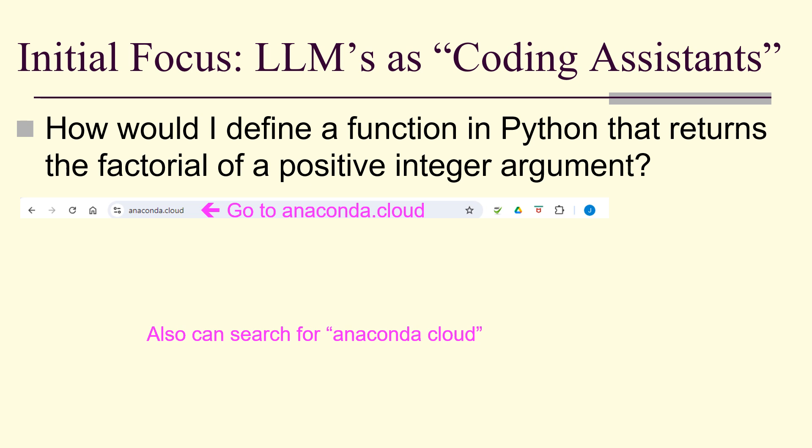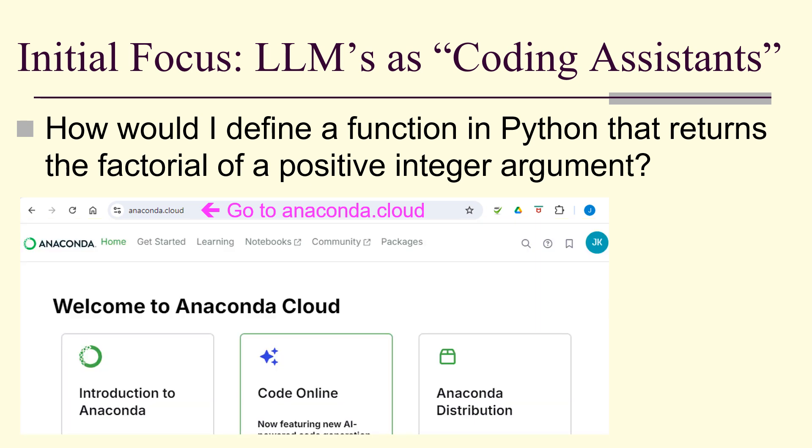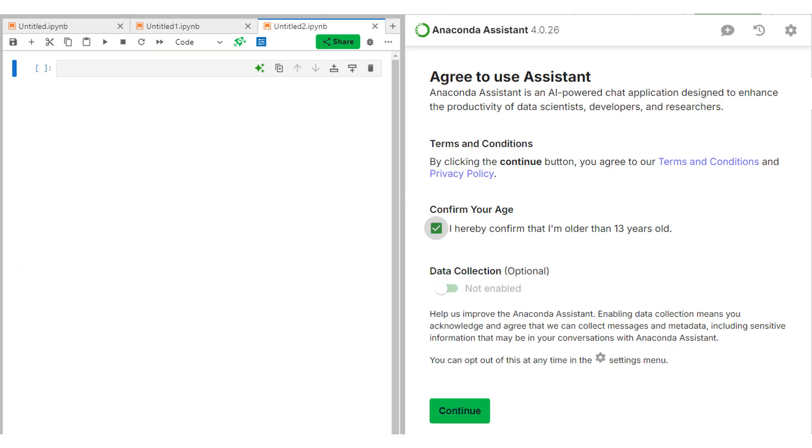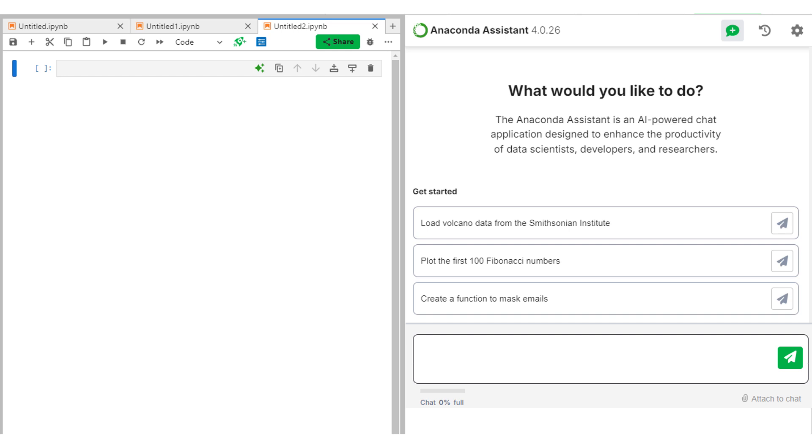For example, if you set up an account on Anaconda Cloud, then it looks something like this. You have to get an account, but it's free, and then you can go to notebooks and you'll get something that looks like this once it's started up. And it will ask you if you want to use the assistant. This is actually ChatGPT specifically for Python applications. Confirm your age, click continue, and now you've got the Anaconda assistant - ChatGPT for Python in JupyterLab.